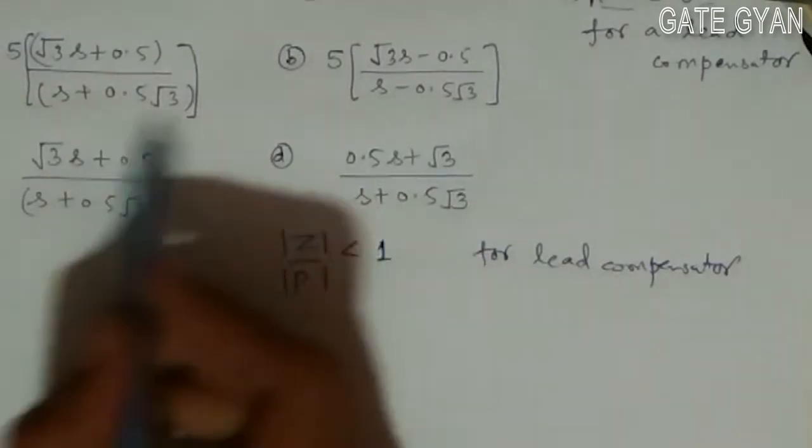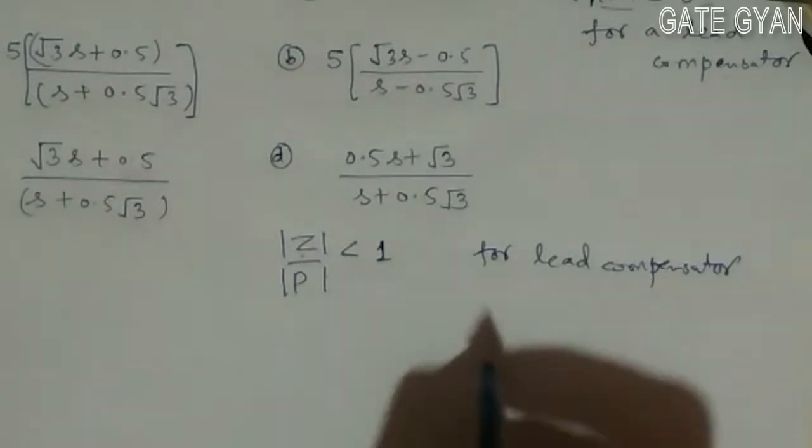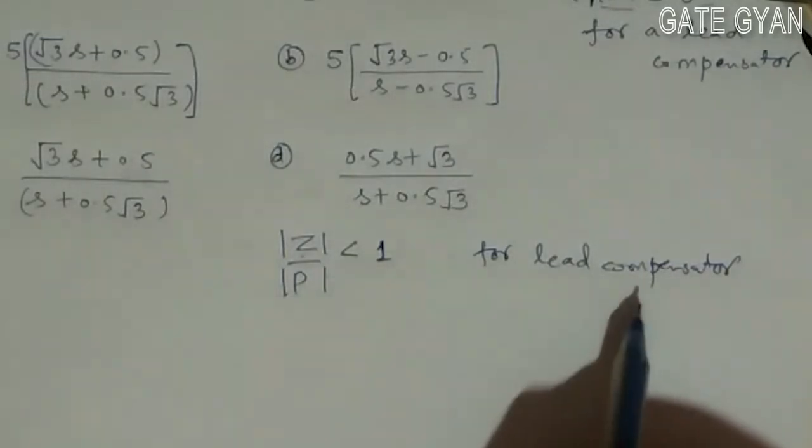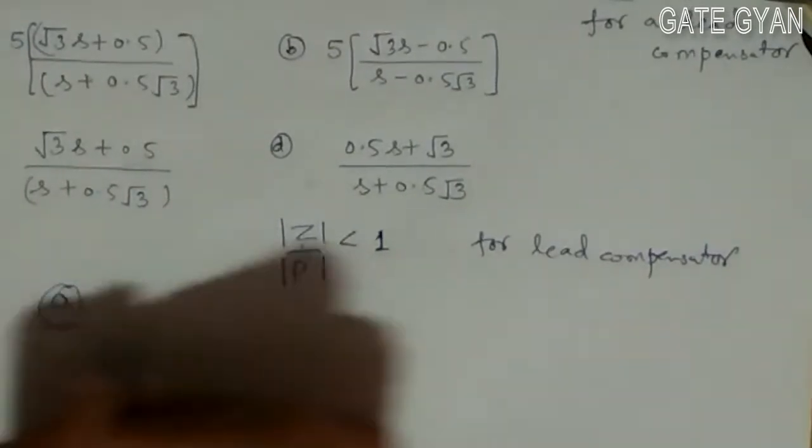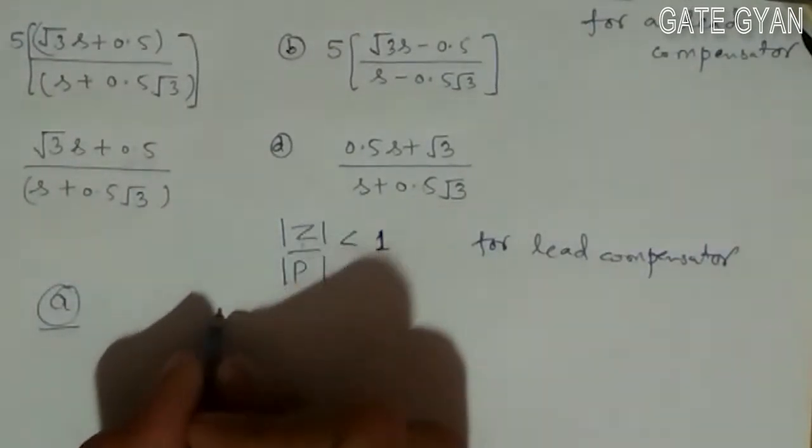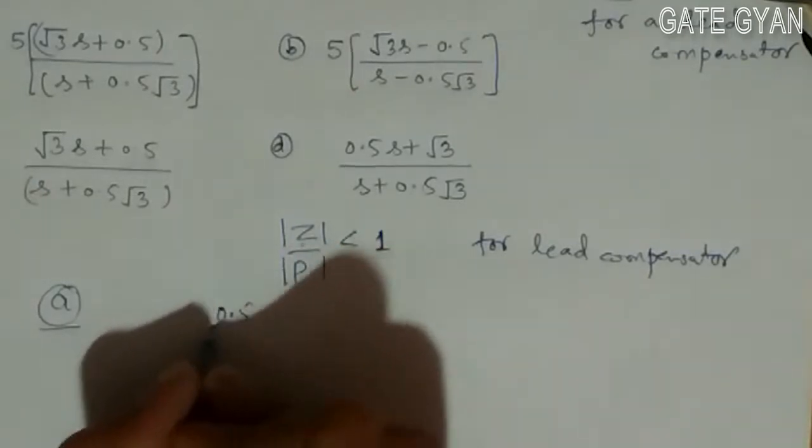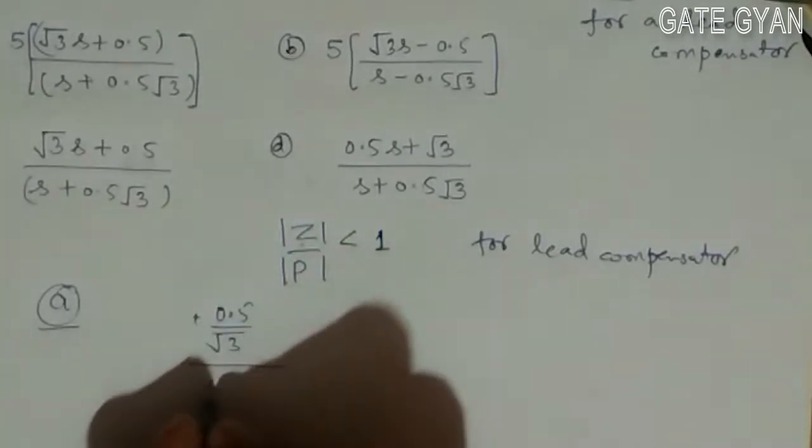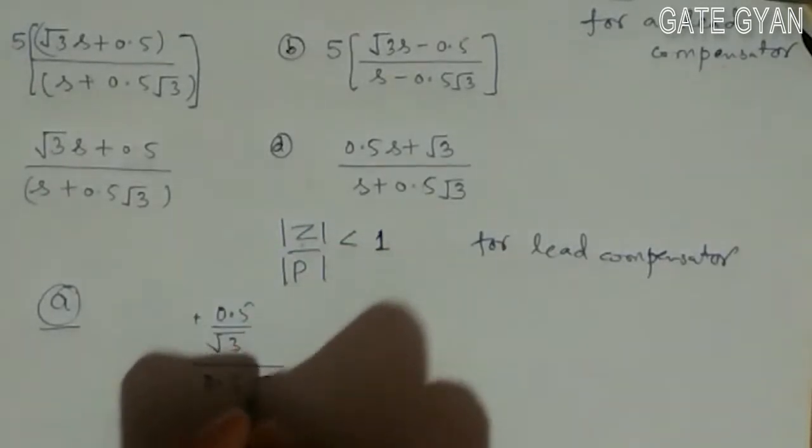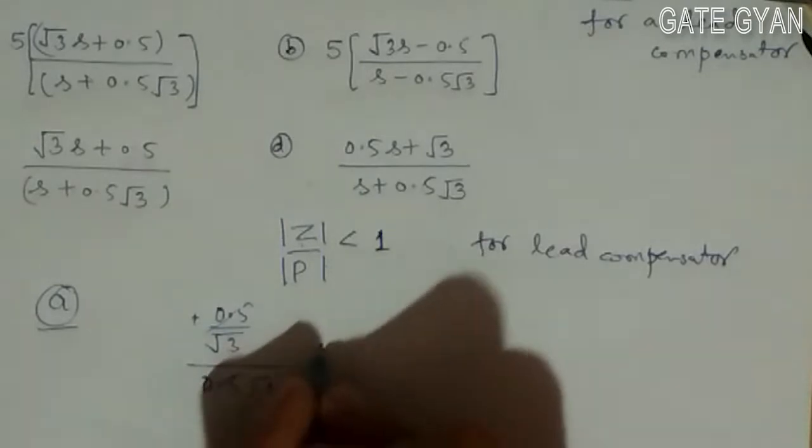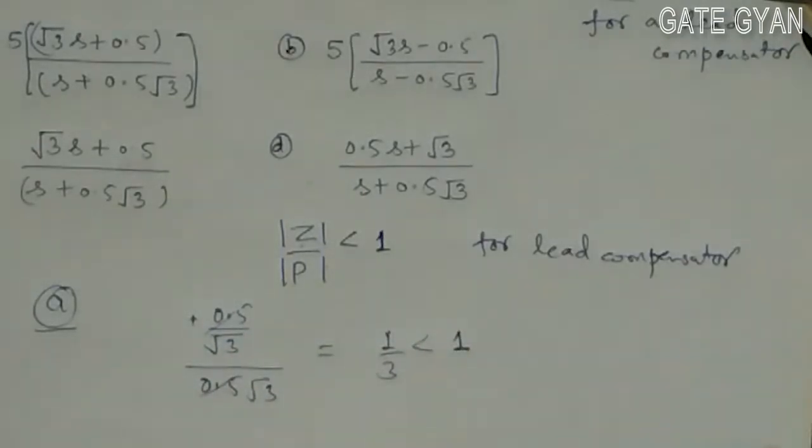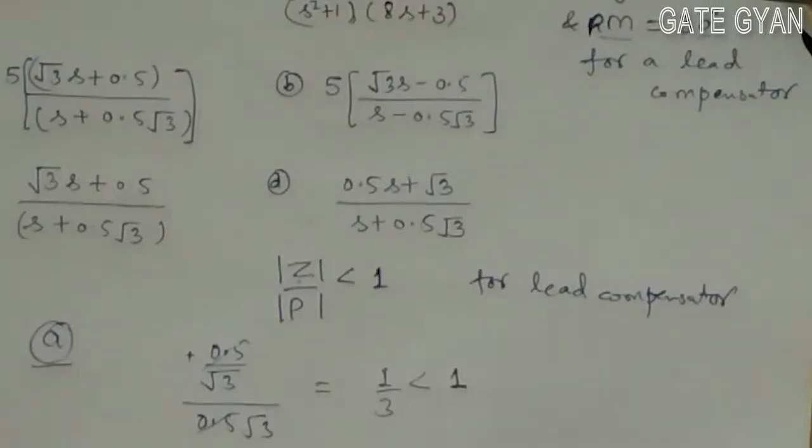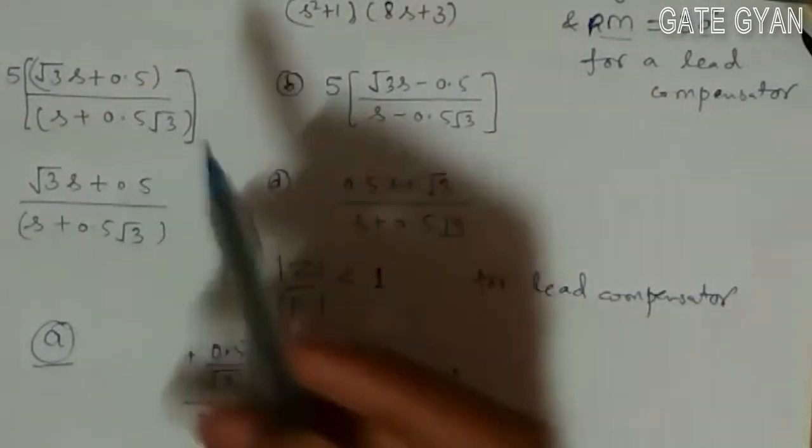From all the given options, let's check which are lead compensators. For the first option, |z| = 0.5/√3 and |p| = 0.5√3, so the ratio becomes 1/3, which is less than 1. Similarly, in option C, we get a ratio less than 1, so options A and C are lead compensators.